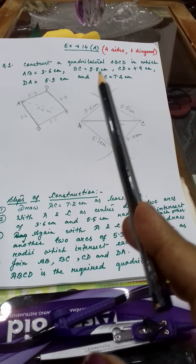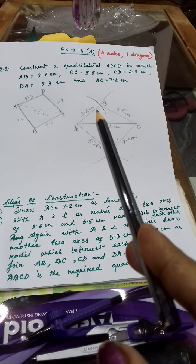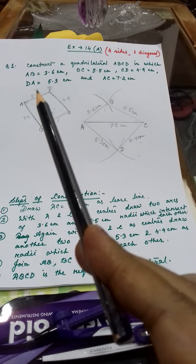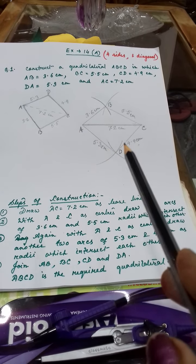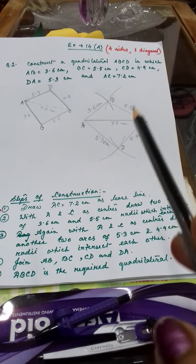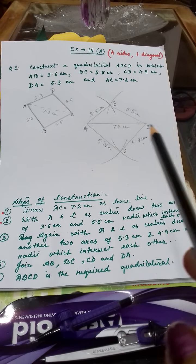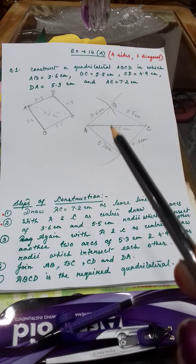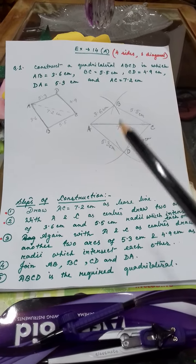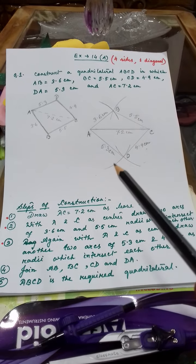Similarly, from A as the center with AD = 5.3 cm, draw one arc. Again, with C as the center and CD = 4.9 cm, draw another arc. Since AC is the diagonal considered as the baseline, these two pairs of arcs have intersected each other on either side of the diagonal.